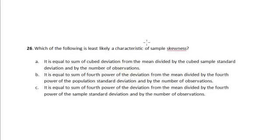Which of the following is least likely a characteristic of sample skewness? Option A: It is equal to the sum of the cube deviation from the mean divided by the cube sample standard deviation and by the number of observations. Option B: It is equal to the sum of the fourth power of the deviation from the mean divided by the fourth power of the population standard deviation and by the number of observations. Option C: It is equal to the sum of the fourth power of the deviation from the mean divided by the fourth power of the sample standard deviation and by the number of observations.